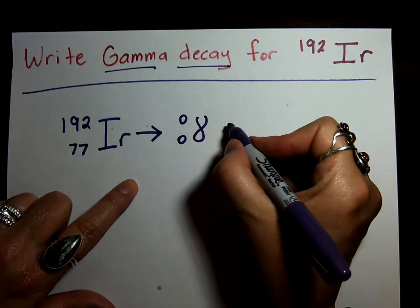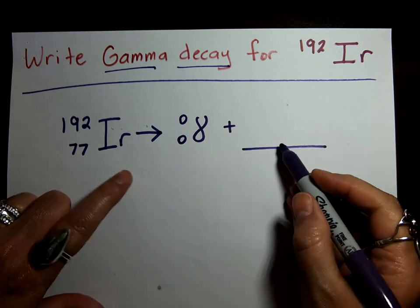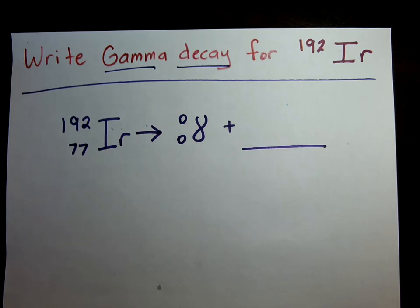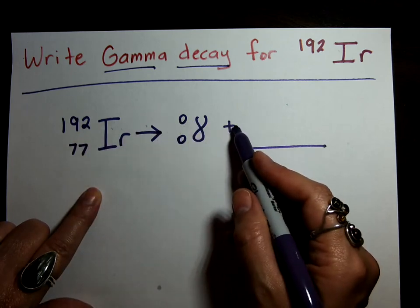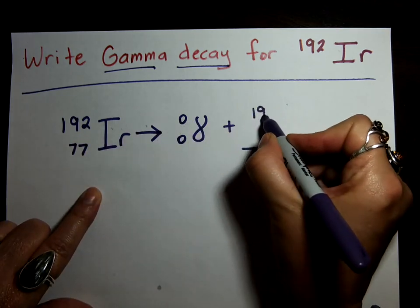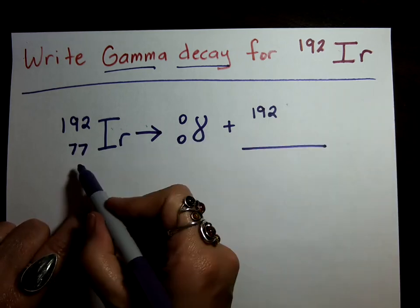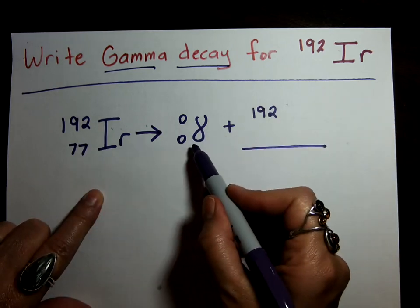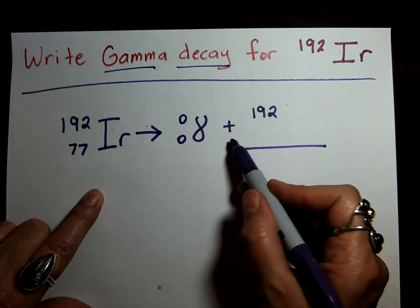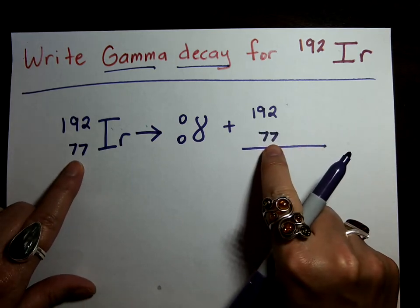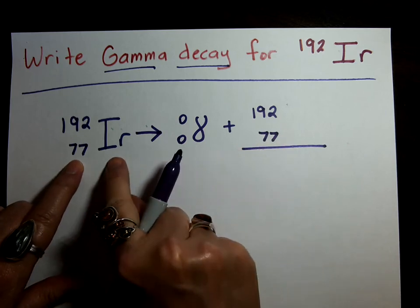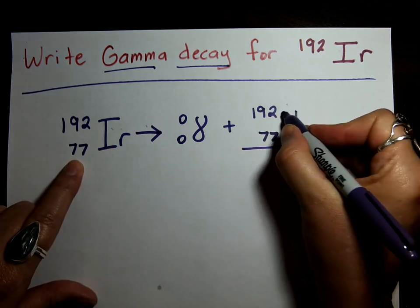And now, we need to figure out the daughter atom. Gammas are pretty easy, aren't they? 192 equals 0 plus... Well, 192. 77 equals 0 plus 77. What has 77 protons? Well, it's still IR because that didn't change.